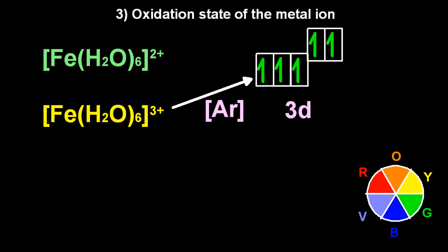For the second one, the oxidation state is plus three. Bigger split. Bigger oxidation number. So it has to absorb a higher energy. Actually it absorbs violet. And so it appears yellow.